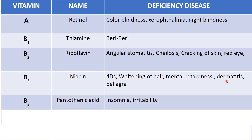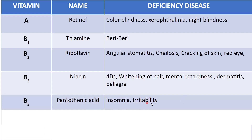Next is vitamin B5, called pantothenic acid. It is essential for the synthesis of coenzyme A and acyl carrier protein, and coenzyme A is needed for fatty acid metabolism. Deficiency of this leads to insomnia — that is, inability to sleep properly at night — and irritability.